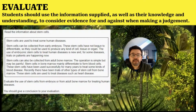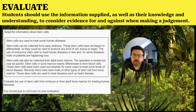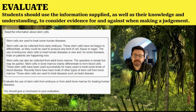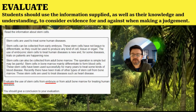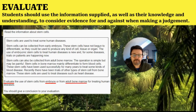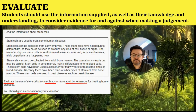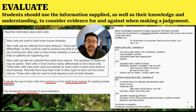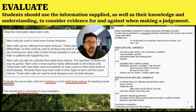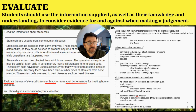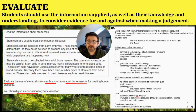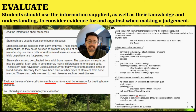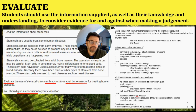Let's look at some examples. Usually they will give you information supplied. In this case, it's about stem cells — embryonic and adult stem cells. The question says evaluate the use of stem cells from embryos or from adult bone marrow for treating human disease, and you should give a conclusion to your evaluation. Importantly, marks should not be awarded for simply copying the information provided — you can use it, but it's just setting the scene.